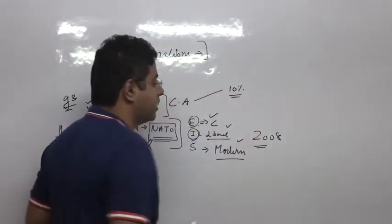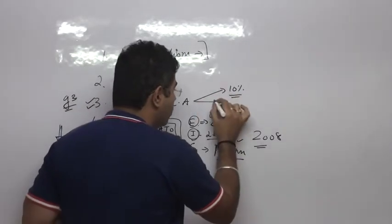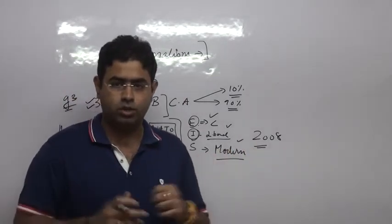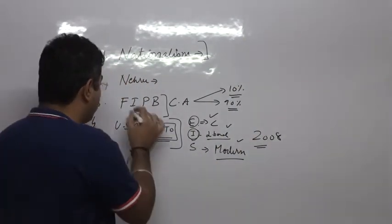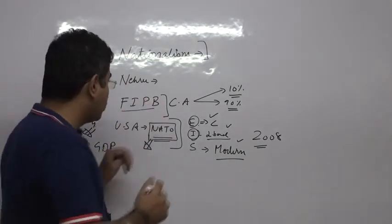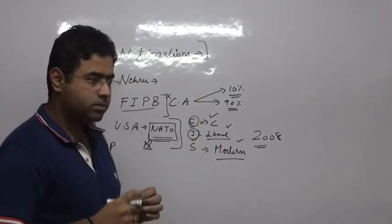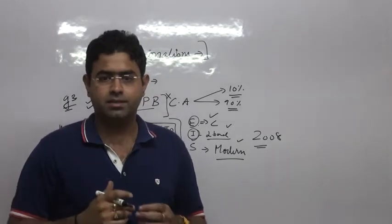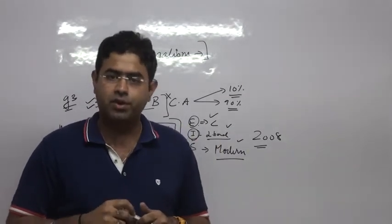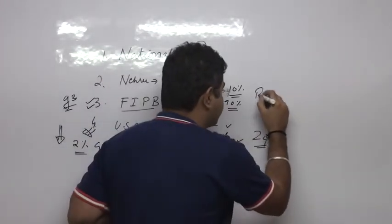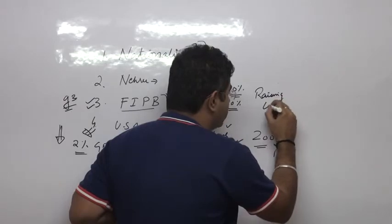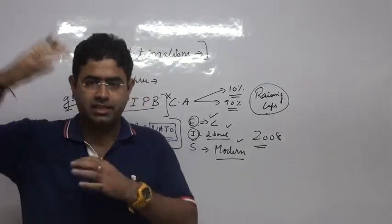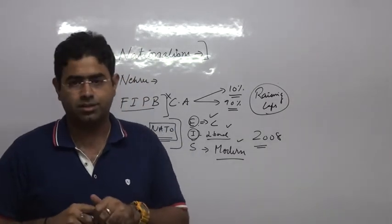90% of the investment is done through automatic route. So 90% investment goes through automatic route, only 10% comes through Foreign Investment Promotion Board.